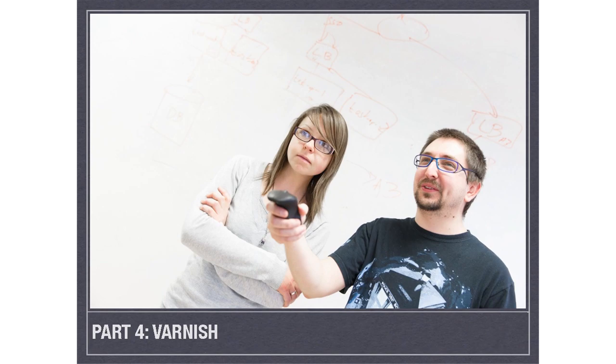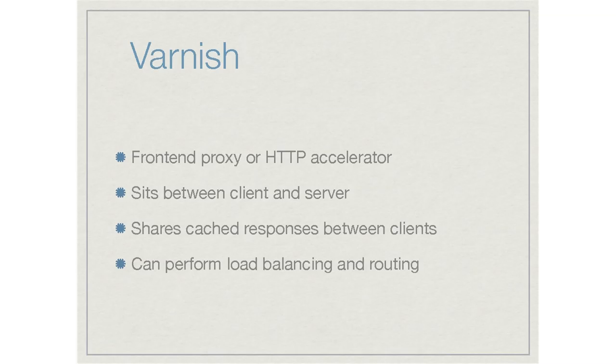This brings us to the main part of the talk: Varnish. With the CMS and other modular applications, the API, and the SSO application all sitting behind careerswales.com, we needed Varnish for several reasons. Varnish is a front-end proxy or HTTP accelerator — basically it makes things really fast. When it comes to caching, a dedicated proxy like Varnish or Squid is what you want. You can configure caching in Symfony manually, but this is where you get really, really good speed gains. It sits between the client and the server, intercepting requests and responses.